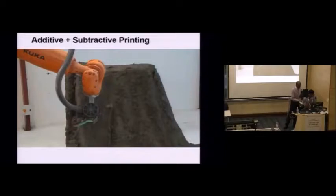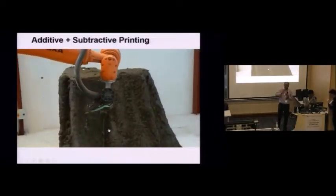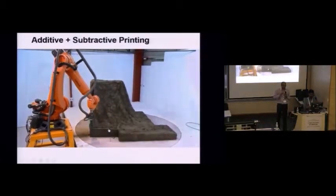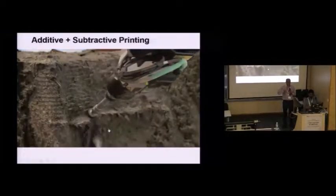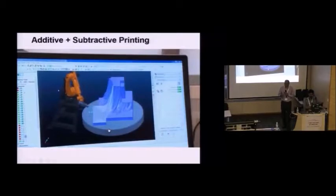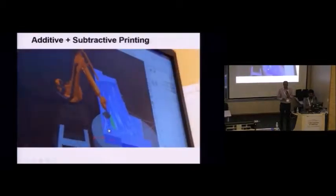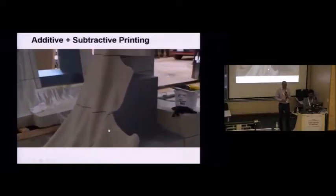This is additive and subtractive technology. So you can add the material. But when you add it, you don't have to add it so precisely. Because you can use a milling method to subtract and shape it. And this technology was used to build some large monuments. If you come to our conference in November, you can visit this place and have a look at all the monuments that are built using this technology.